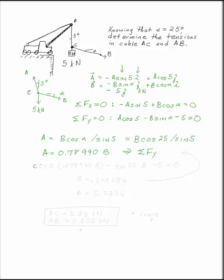Cosine 5 times 0.078990B minus sine 25B minus 5 equals zero. That equation can be solved for B. B is 0.503206.